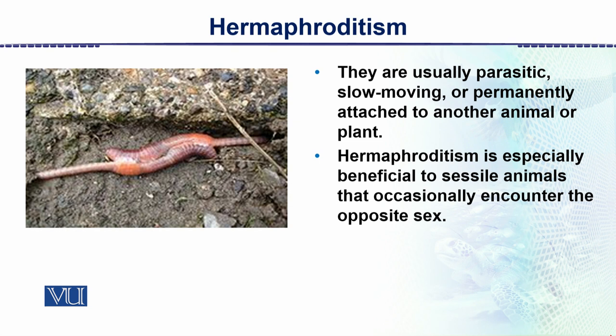Hermaphroditism is especially beneficial to sessile animals that occasionally encounter the opposite sex. In this diagram, we can see two earthworms — these are not sessile, they are motile. So at the time of reproduction, they come very close together and the two individuals exchange sperms — that is, individual A fertilizes the eggs of individual B. These are the animals said to be hermaphrodites.